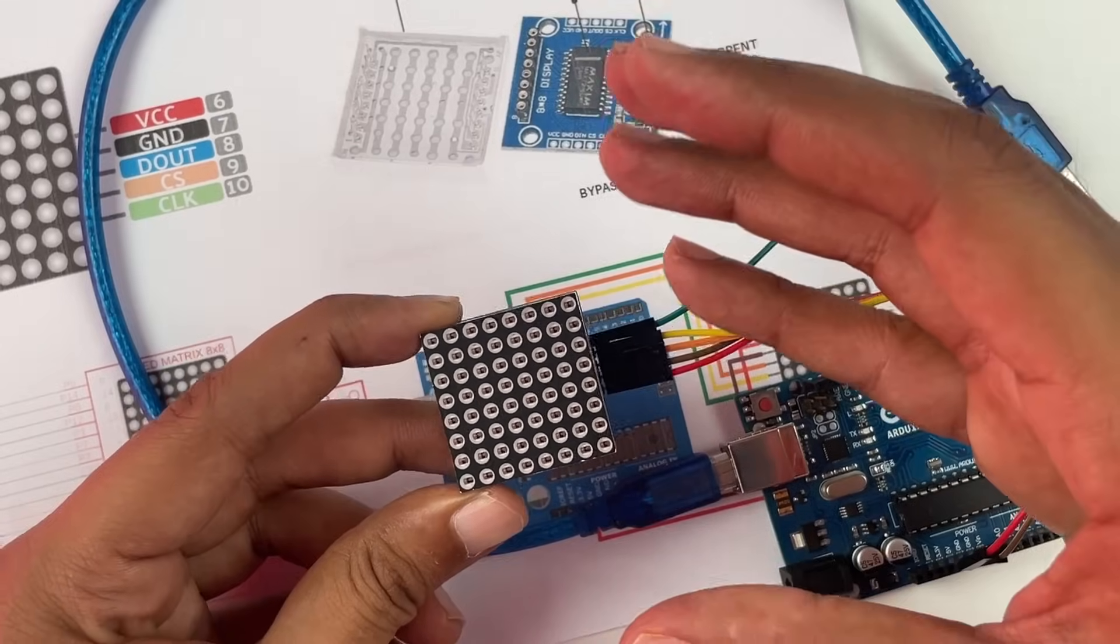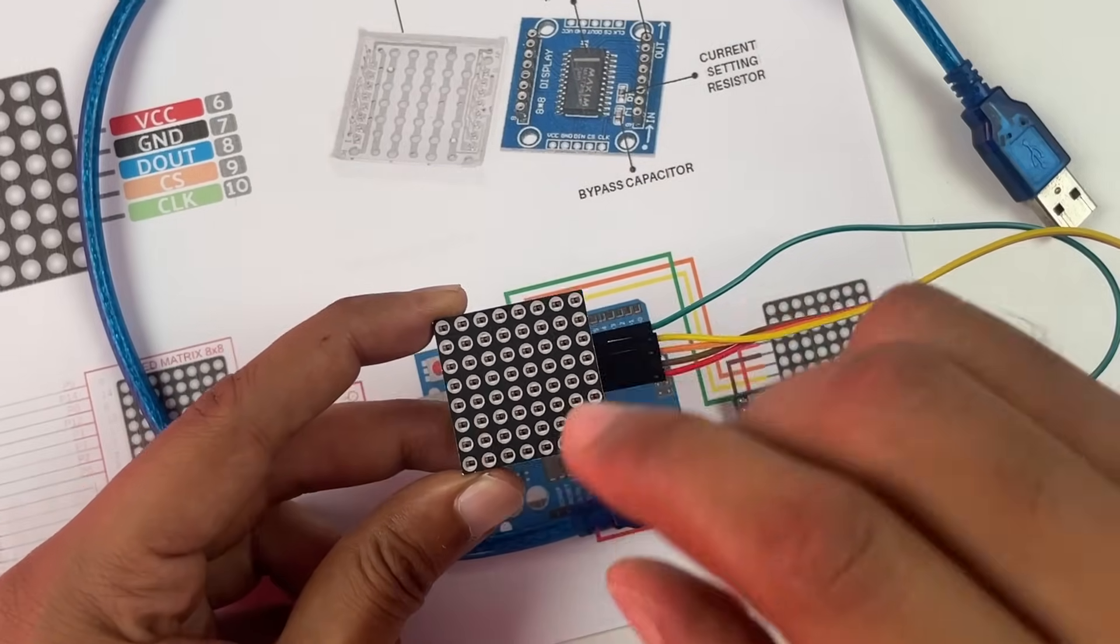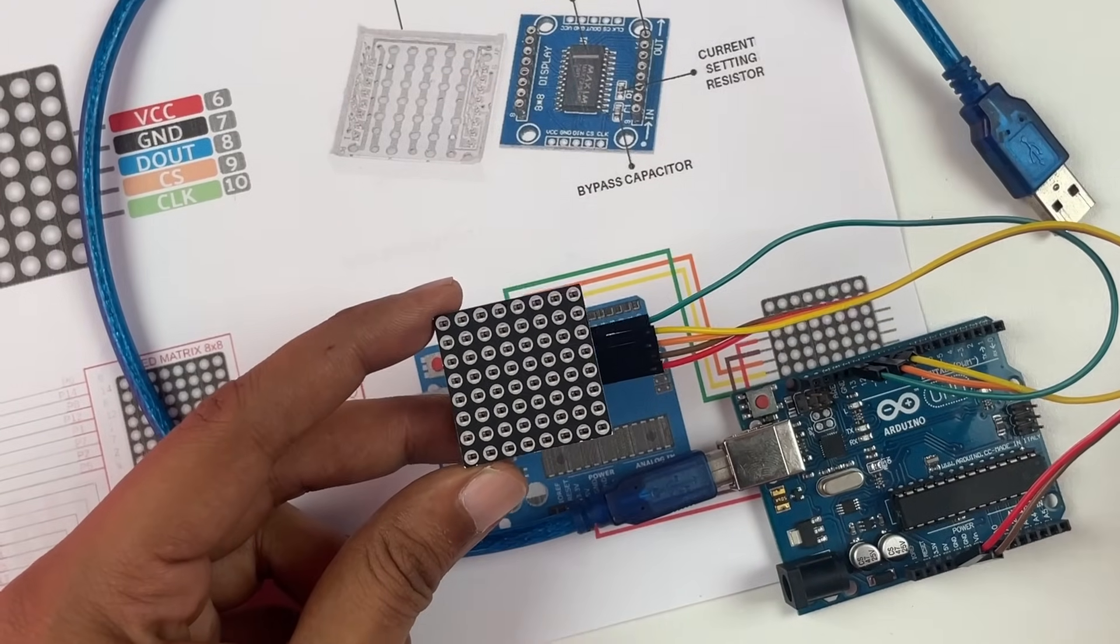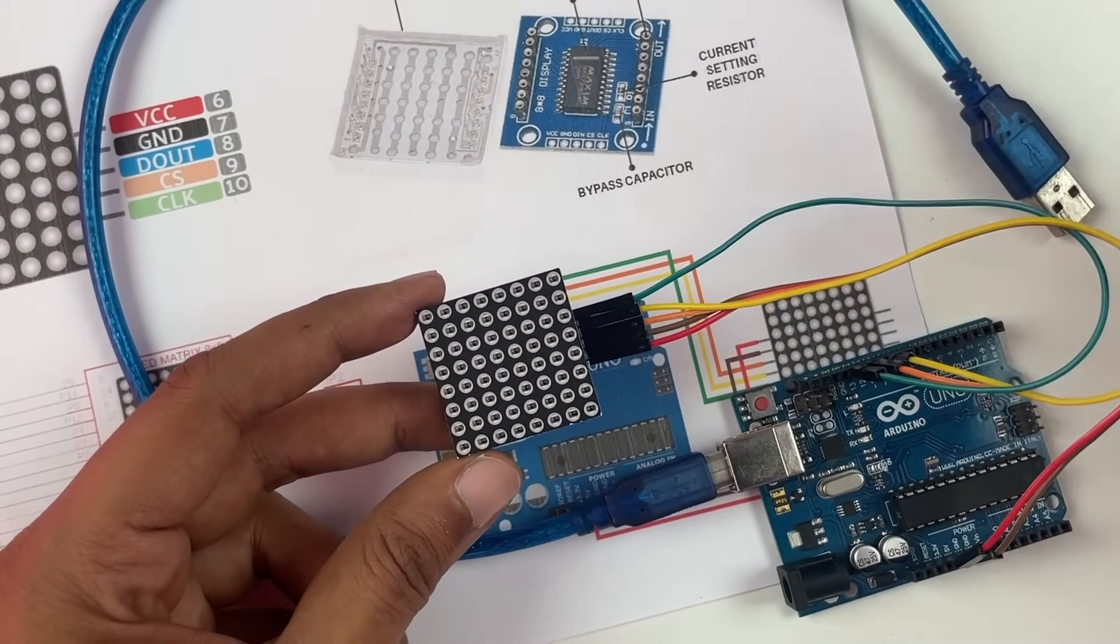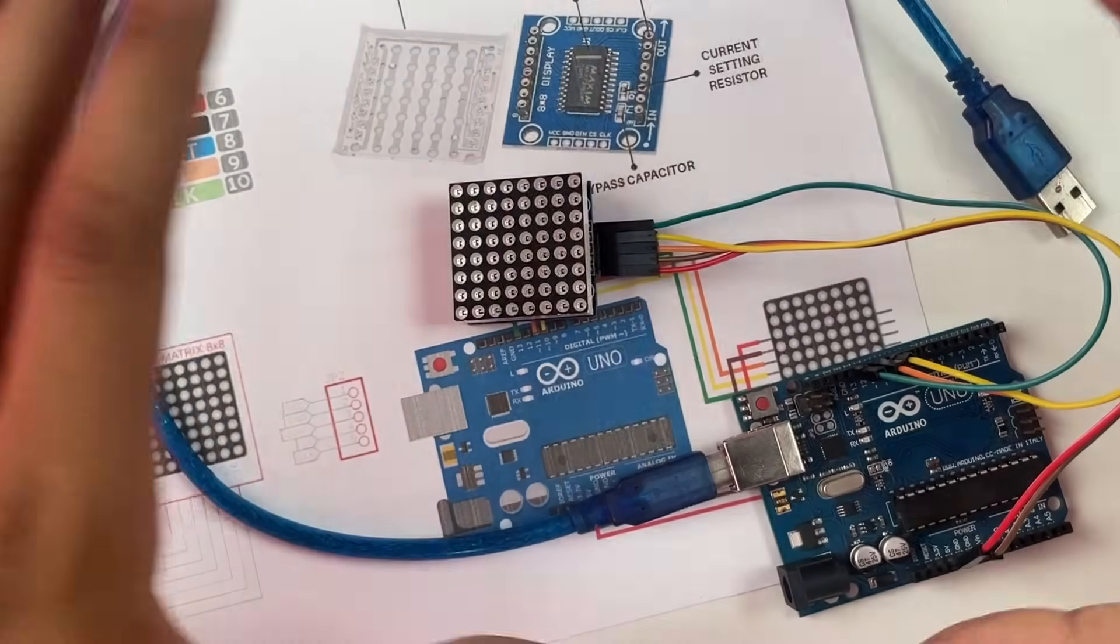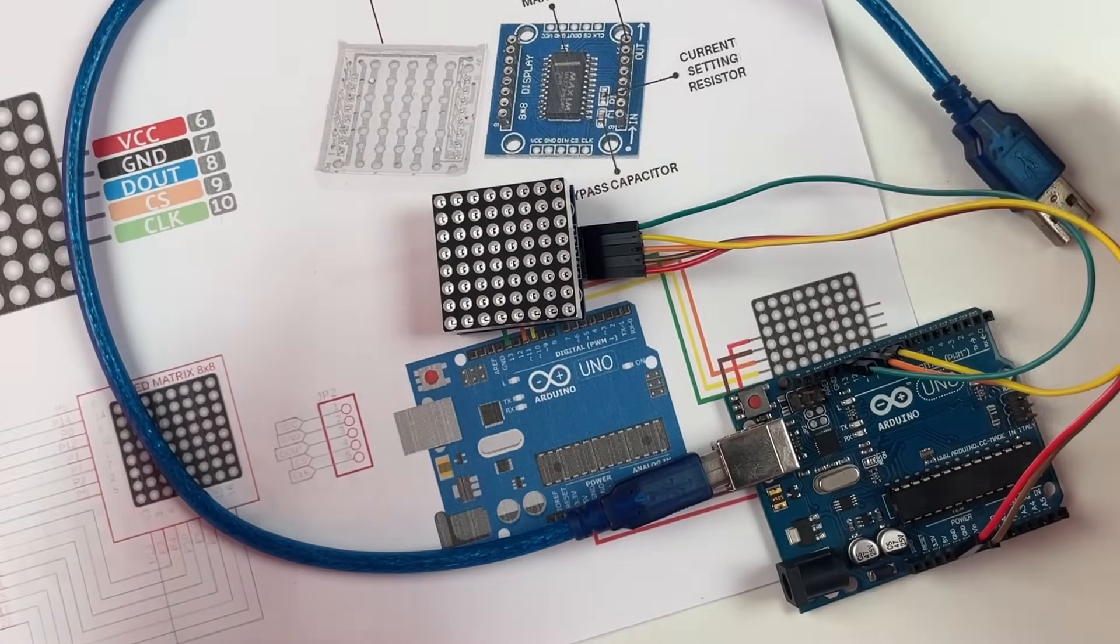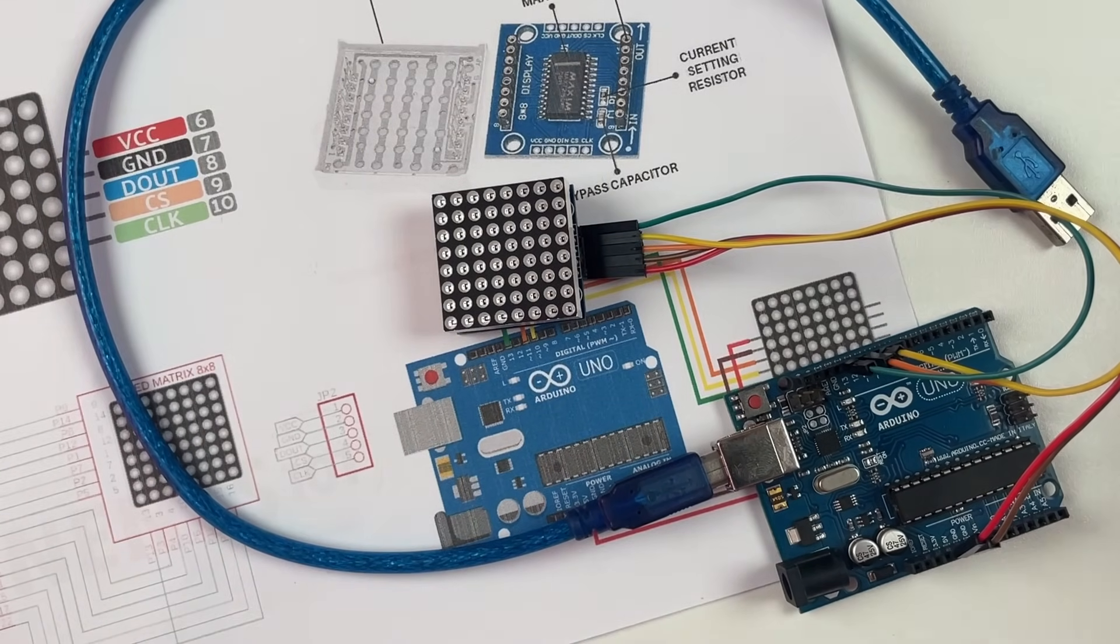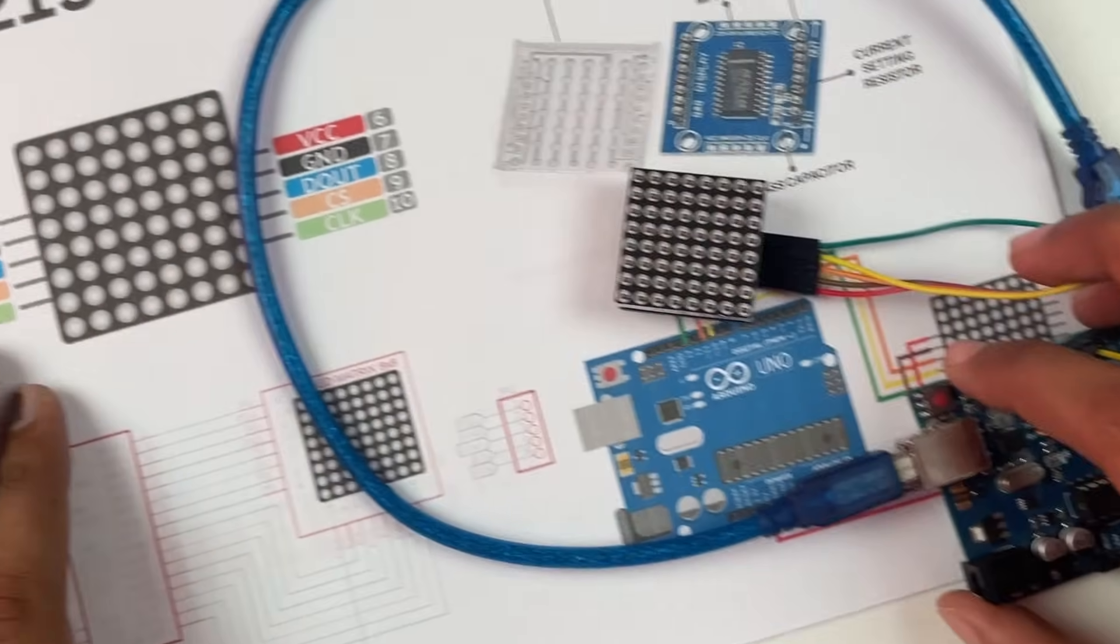With this connection, all you have to do is upload the code. I'm not going to get in depth of the code for this video, but we have given a link in the description which properly explains the code, so you can check that out. All you have to do is connect it and power it and your dot matrix display will start working.